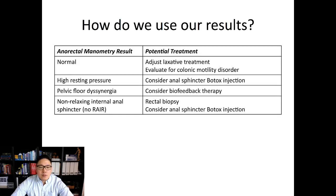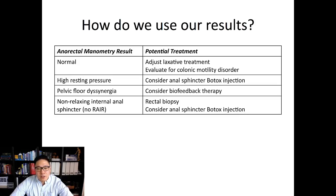So how do we use these anorectal manometry results? If the test is normal, we may still adjust laxatives. If it's not the anorectal physiology, maybe it's the colon, so we can consider doing a colonic manometry. If the anal sphincter resting pressure is very high, we could consider an anal sphincter Botox injection, though more recent evidence — including from us — suggests Botox may help even if resting pressure is normal. For pelvic floor dyssynergia, which can be harder to diagnose in younger children, biofeedback therapy can be an option to teach them to relax their pelvic floor when trying to push.